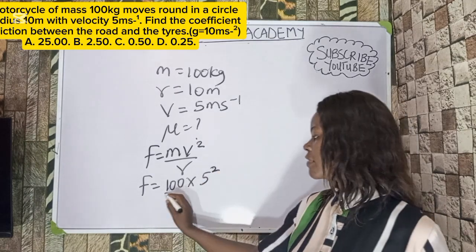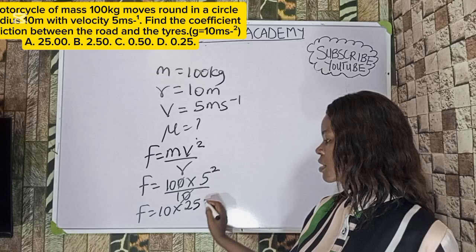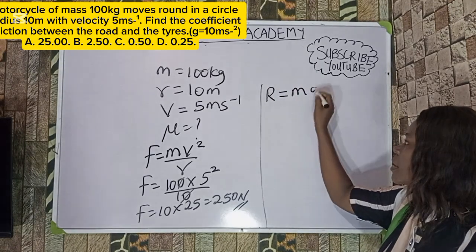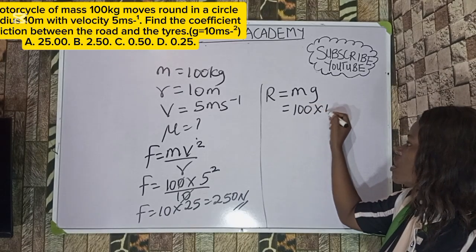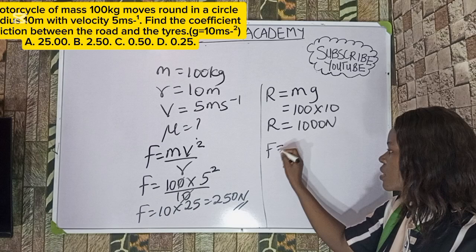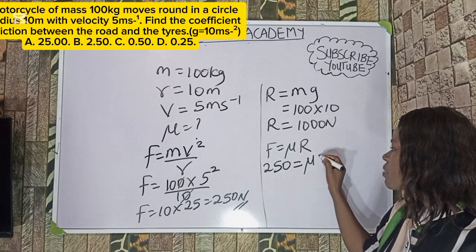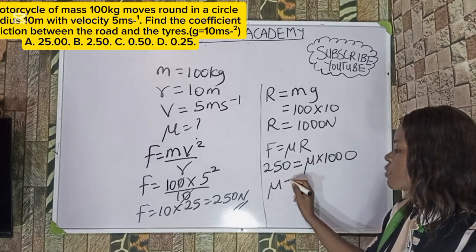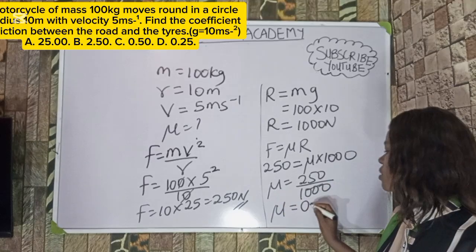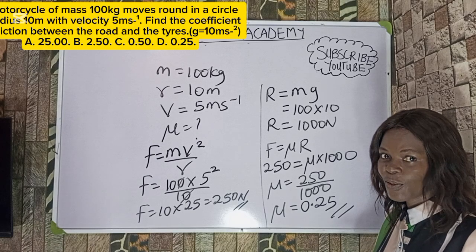Substituting: F = 100 × 5² / 10 = 100 × 25 / 10 = 250 N. The normal reaction R = mg = 100 × 10 = 1000 N. Since frictional force = μR, we have 250 = μ × 1000, so μ = 250/1000 = 0.25. The correct option to this question is Option D.